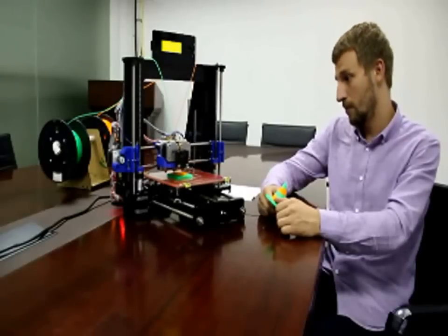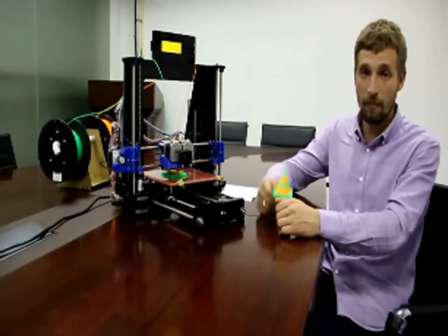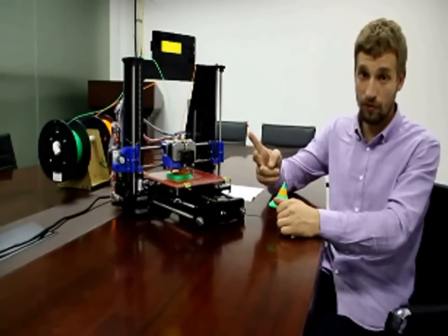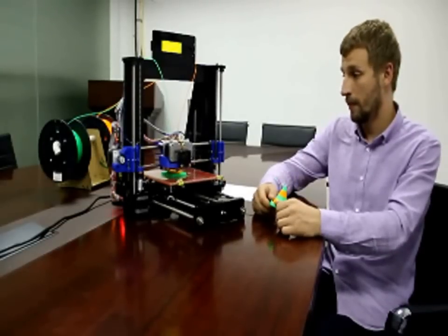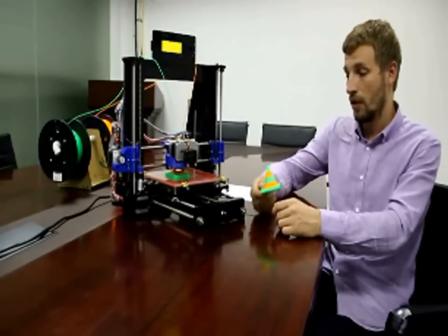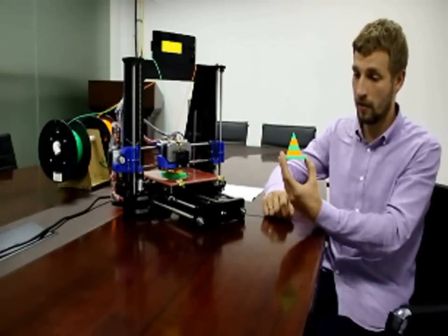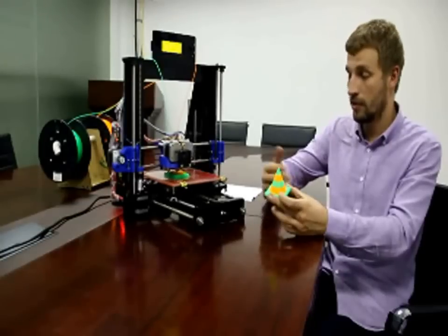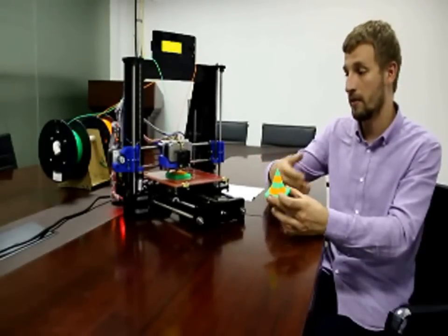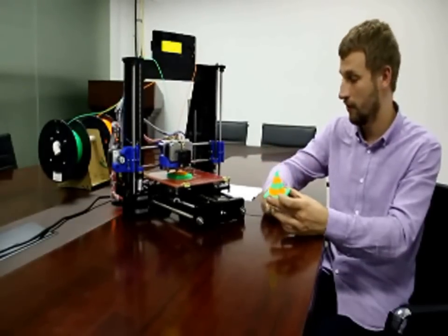The biggest difference from the previous model is that now you can buy it with two extruders. And these two extruders actually can allow you to print colorful objects like this one, or you can print two objects at the same time, or just use one extruder for printing and another extruder just for support material.